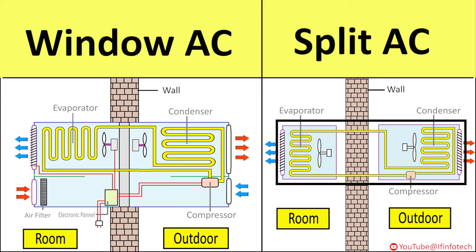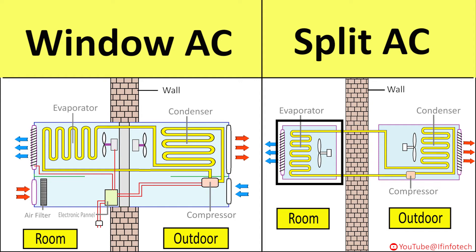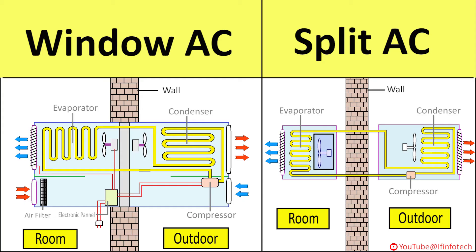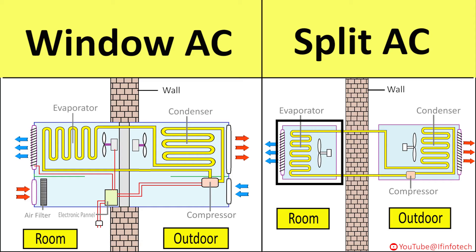Split AC is a modification of window AC, divided into two units. The indoor room unit consists of evaporator coil, evaporator blower (a fan driven by its own motor), and capillary tube — all situated inside the room to be conditioned. The two units are connected with electrical wiring harness and tubing used to pass refrigerant between the two units.